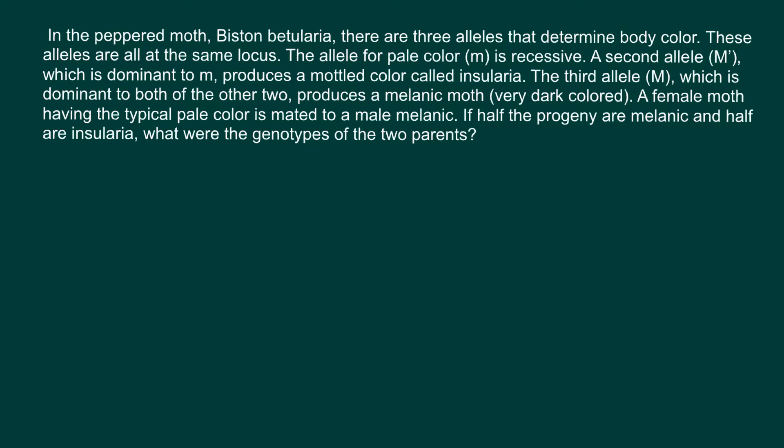Here is the problem: in the peppered moth, there are three alleles that determine body color, all at the same locus. The allele for pale color is small m, which is recessive. A second allele, M prime, is dominant to small m and produces a mottled color called insularia. The third allele, capital M, is dominant to both of the other two and produces melanic moths — very dark colored.